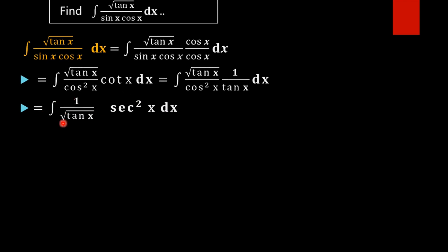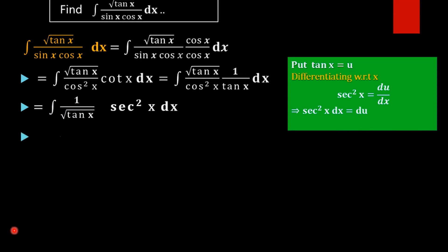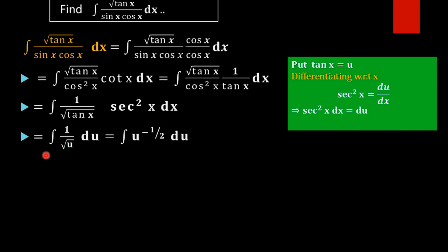Now this function is in an integrable form. For doing integration, we take tan x equal to u. On differentiating with respect to x we get sec²x equal to du by dx, and sec²x dx equals du. By substituting this value, the integral of root u into sec²x dx becomes, since sec²x dx equals du, the integral of 1 by root u du.